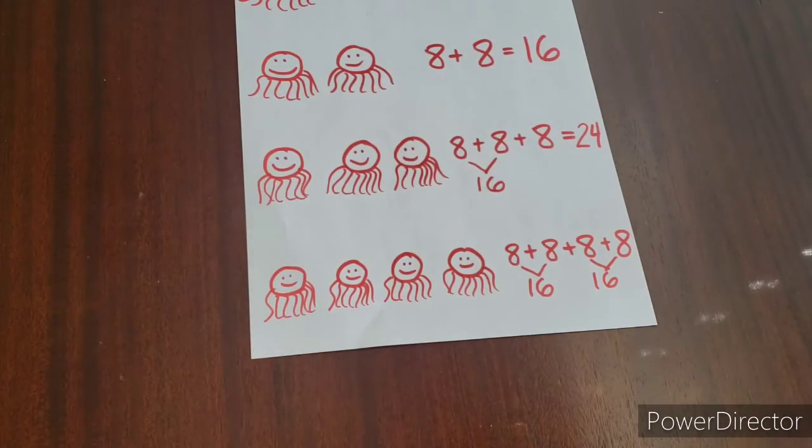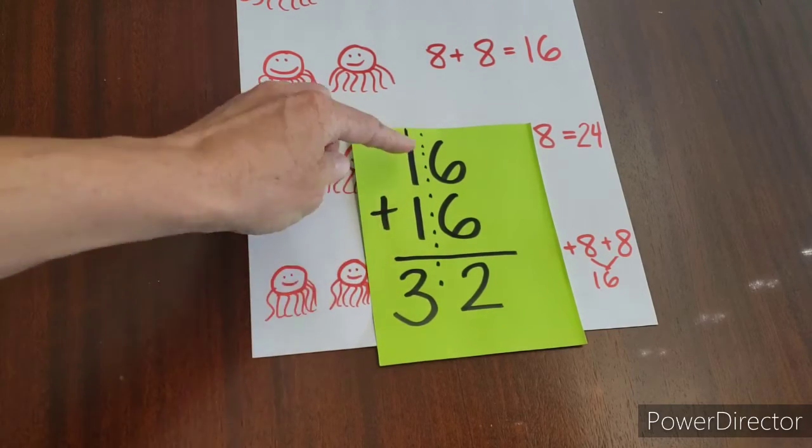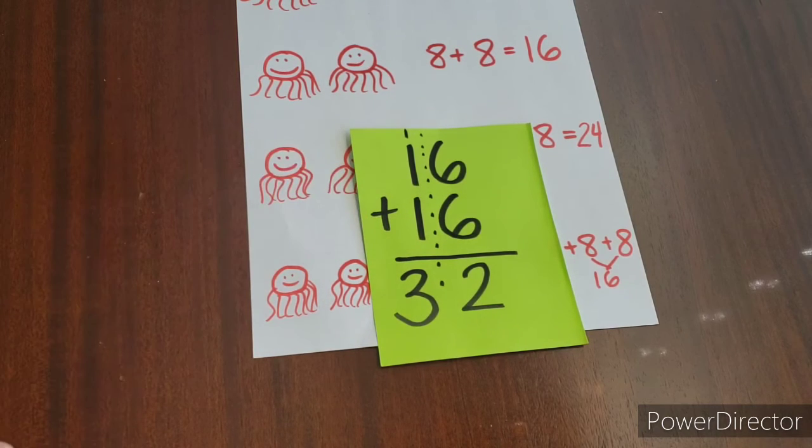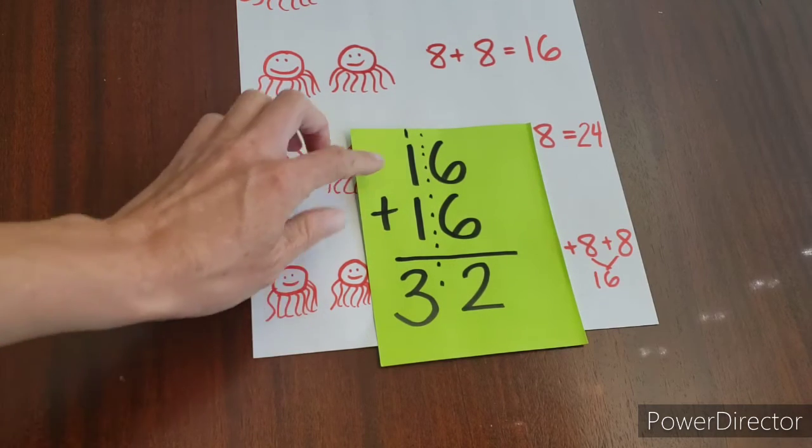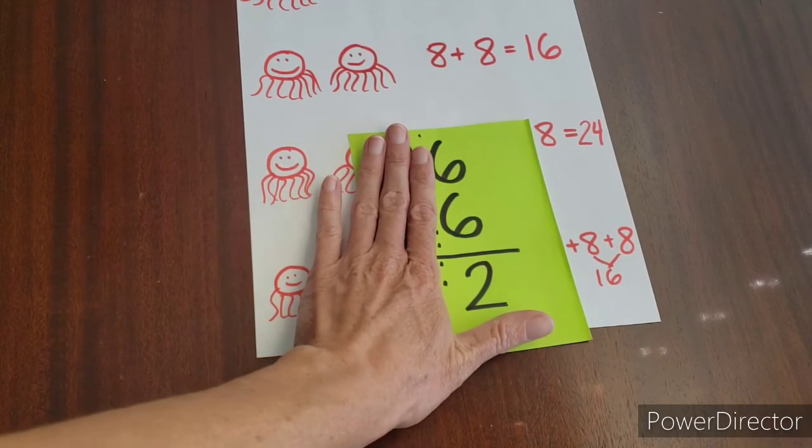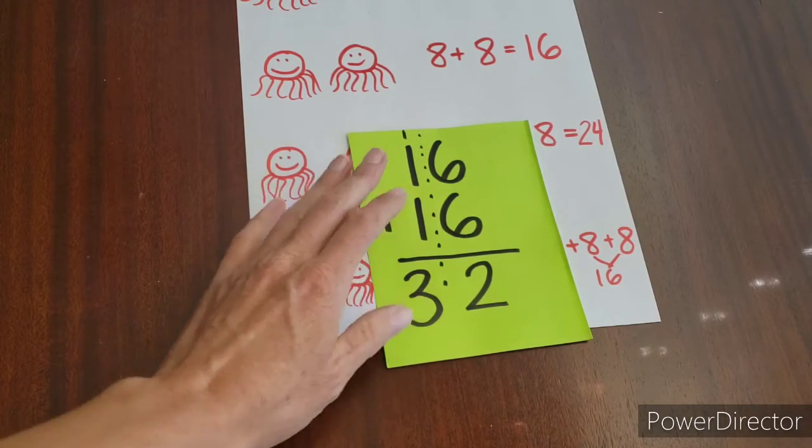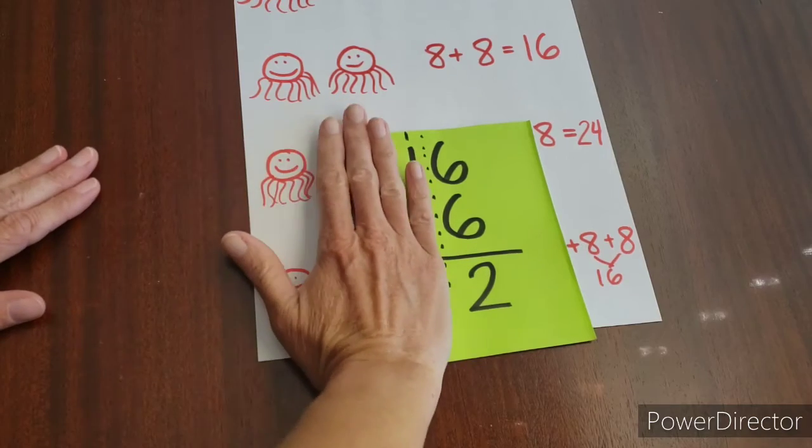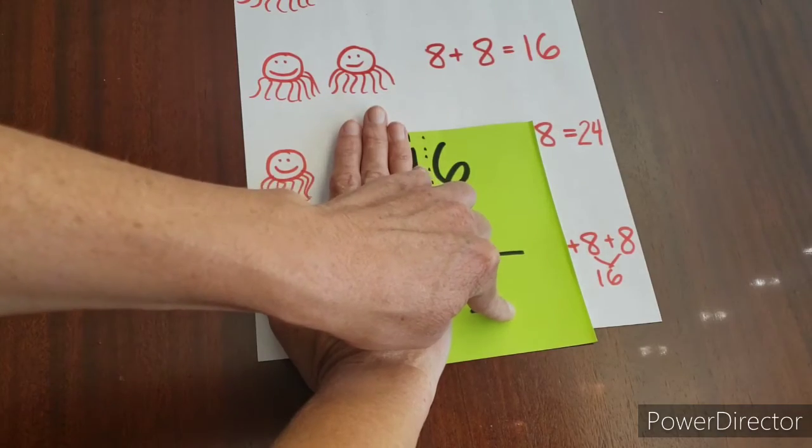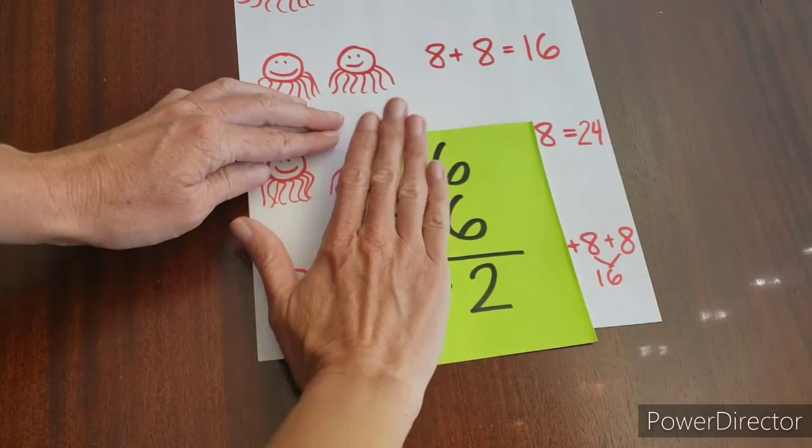So what we can do with that is we can say, well, 16 plus 16 is what? And we can stack it like we do when we do double-digit addition. So remember in double-digit addition, you kind of draw an imaginary line down the middle. And what you're going to do is you're going to look at the right column first. So what's six plus six? We know that six plus six is 12. And what you do is you put the two, the number in the ones place, you put that one on the bottom, and you carry the one over here.